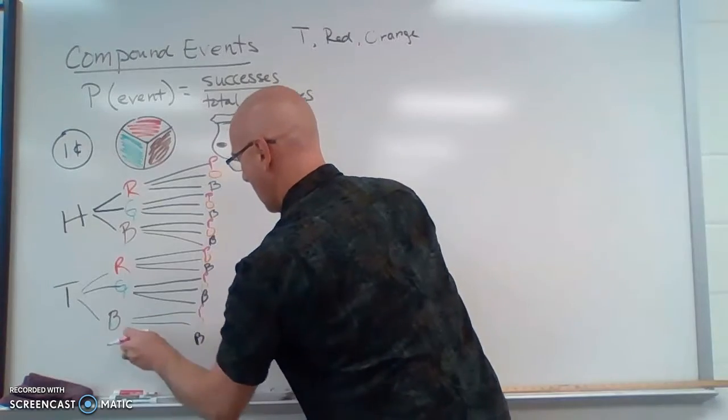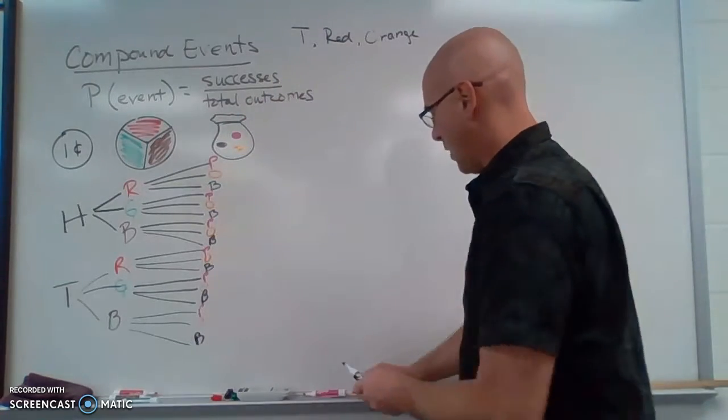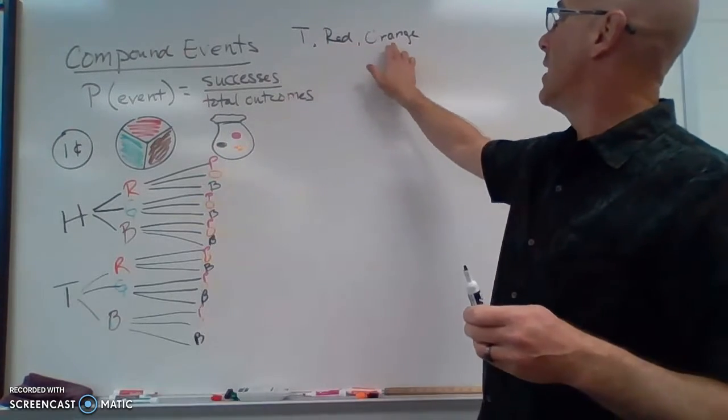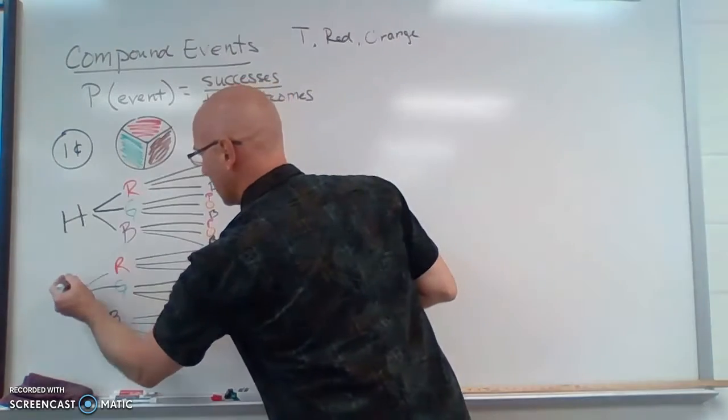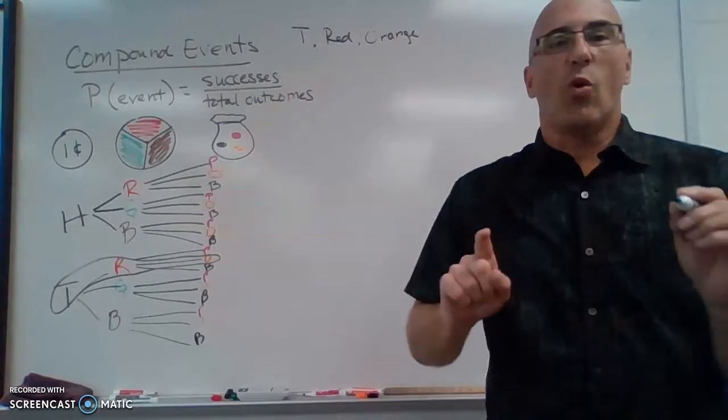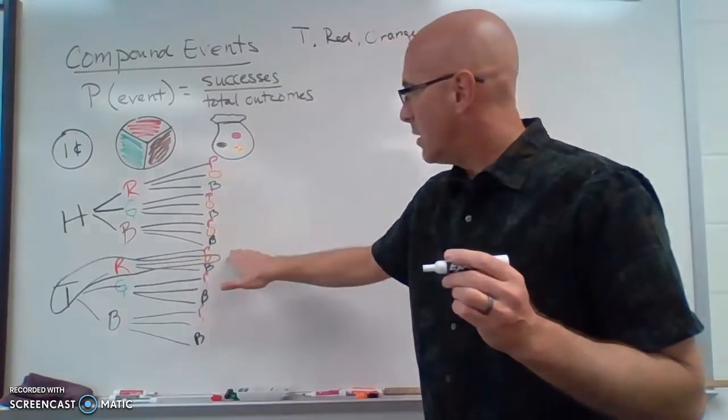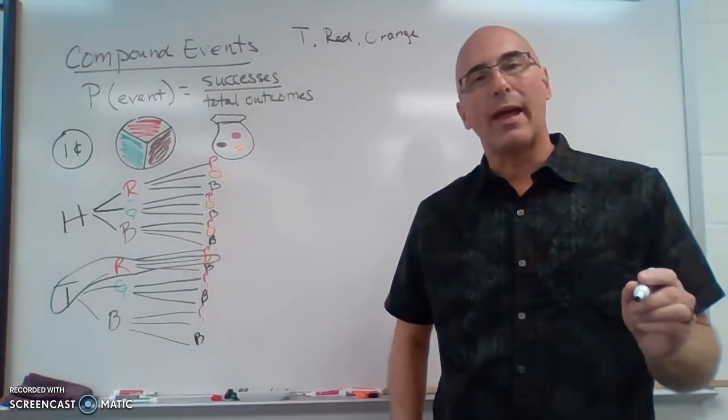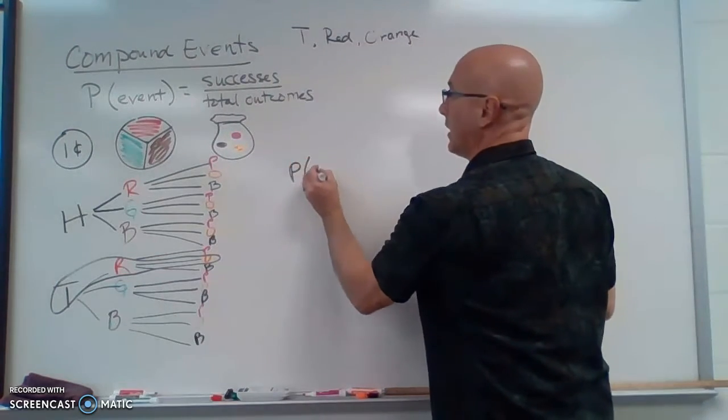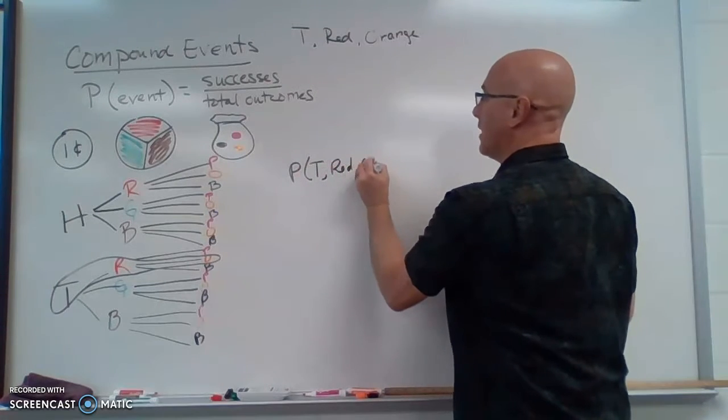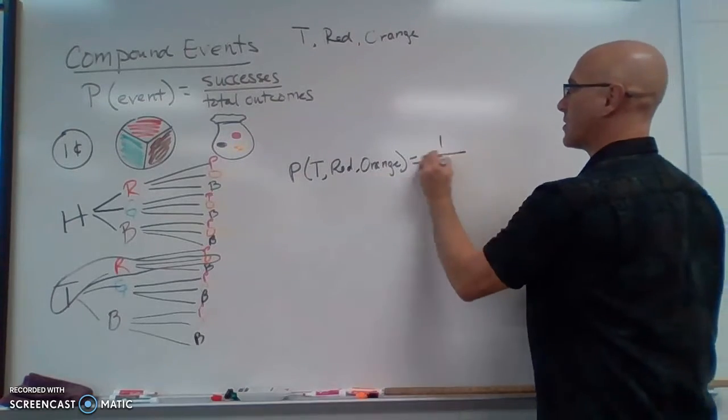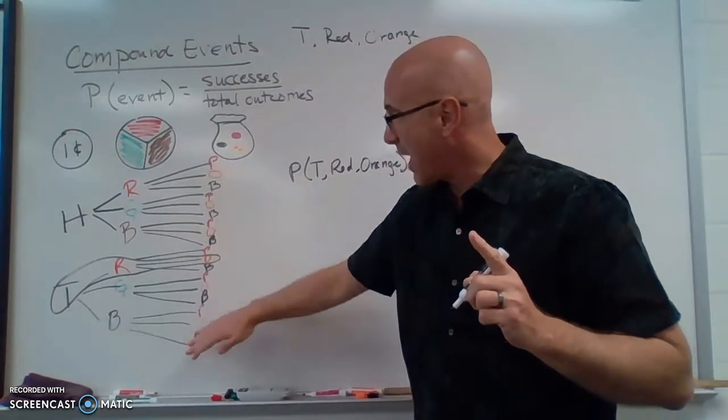All right, so now let's find where my tails, red, and orange is. So it is right here, tails, red, and orange. That is the only way, this one scenario right here is the only way that I can get this to be a success. So my probability of tails, red, and orange is, I only have one chance for a success.